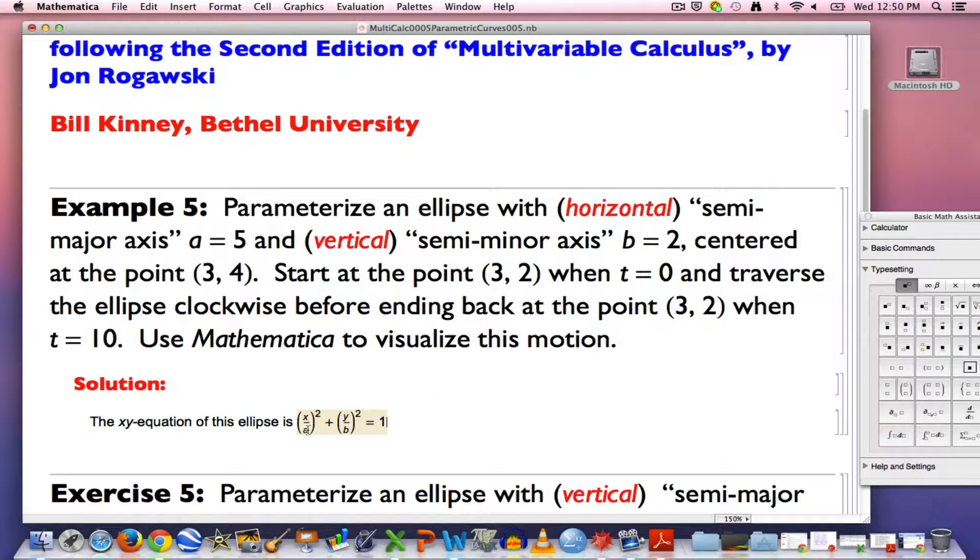Now, if the semi-major axis is horizontally oriented, you would want to call this a, and indeed a would be bigger than b. That's going to be the case for us. And in fact, you can replace a and b with the numbers that we have here, five and two.